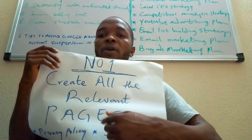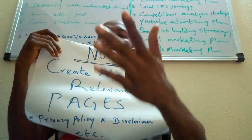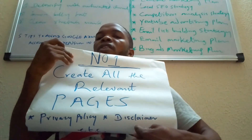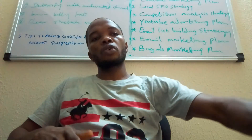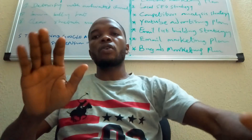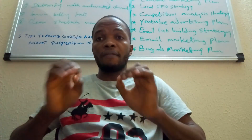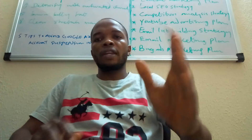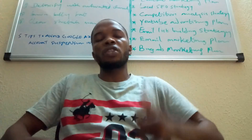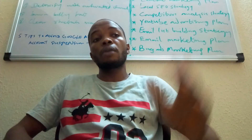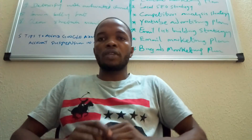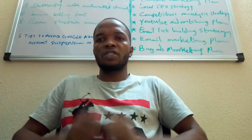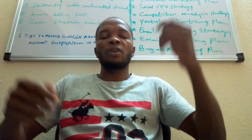Tip number one: create all the required pages on your website. If you're running AdWords on Google, it is necessary to have all the pages available. Some of the key pages are privacy policy and disclaimer pages. These two pages are very important because Google wants to see that your website complies with their policy and that all information on your website is transparent to users. Let your landing page have a link to your privacy policy and disclaimer pages. This is not only helpful for running AdWords but also protects your business from any issues that might arise from disputes with clients.